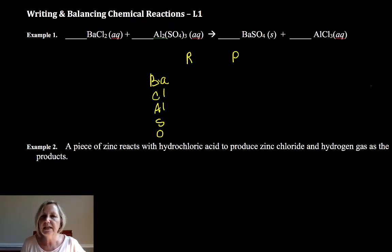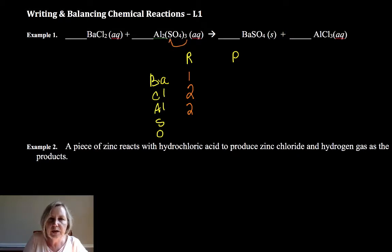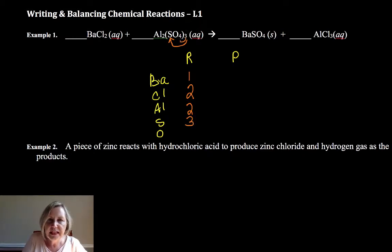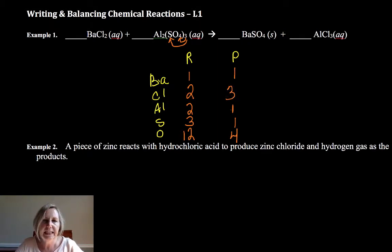Some people can do it in their heads after some time. But some students use a grid to help them out. So they'll count: I have one barium on the reactant side, two chlorines, two aluminums. Notice that the three counts for everything inside the parentheses, so I have three sulfurs and three times four, or 12 oxygens. On the product side, I have one barium, one sulfur, four oxygens, one aluminum, and three chlorines.